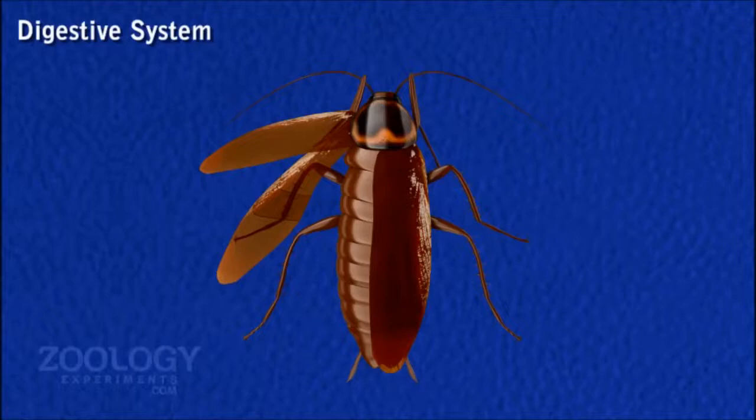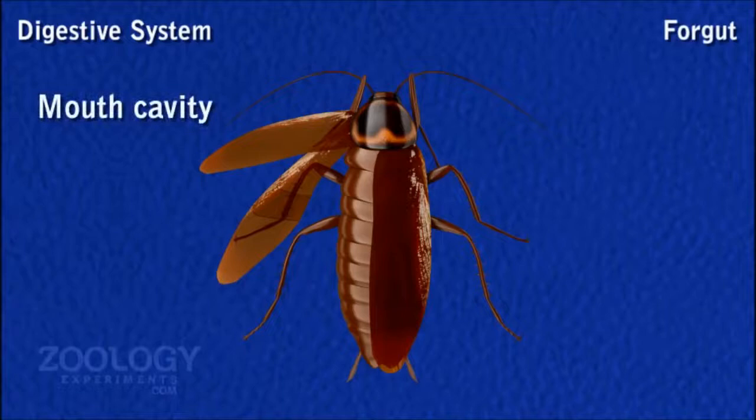Alimentary Canal. It is a long and slightly coiled tube with uneven diameter, and divisible into three regions: foregut, midgut, and hindgut.